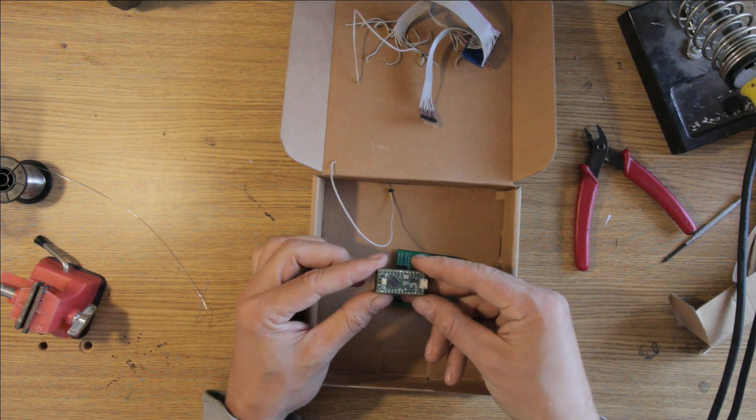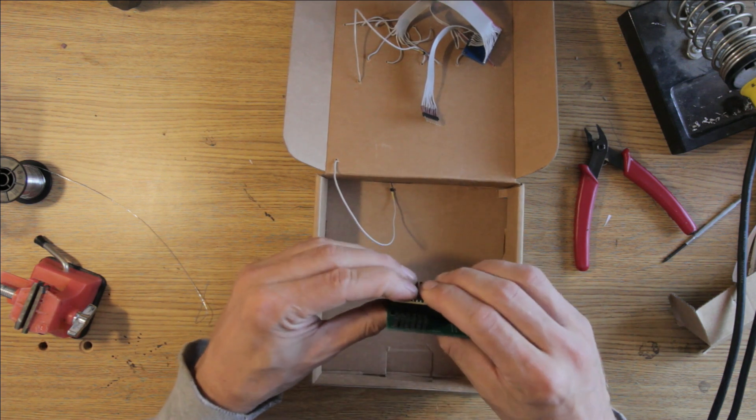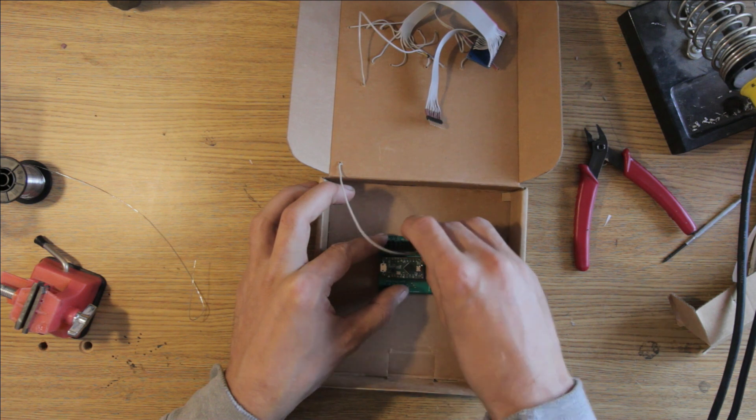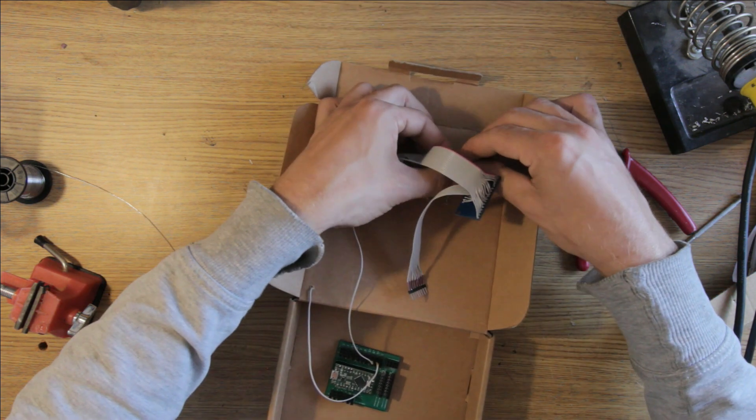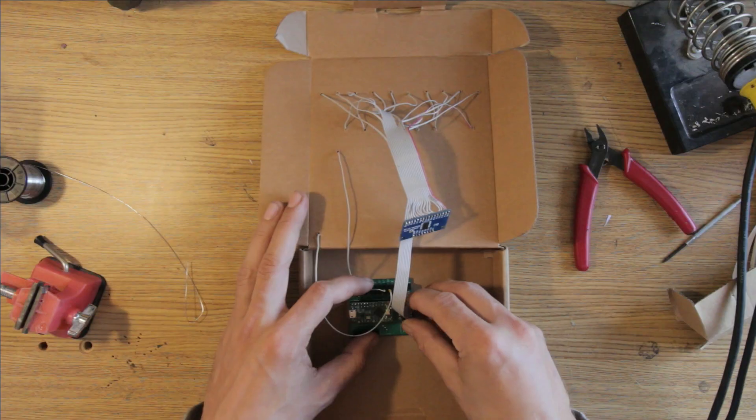As we are already using the 16 connections of the multiplexer for the keys, we will have to draw out two individual cables to the pitch bend sensors. Then plug in the multiplexer module, making sure to get it the right way around.